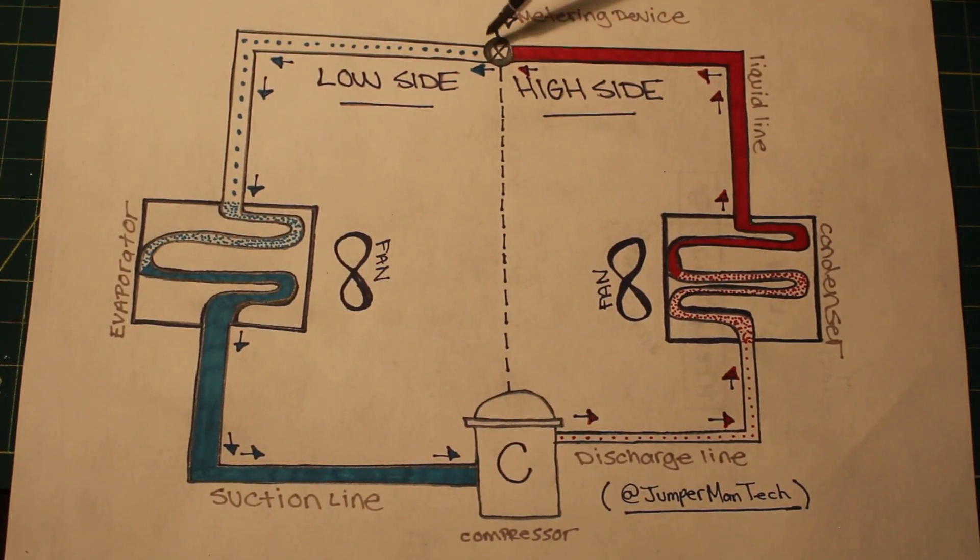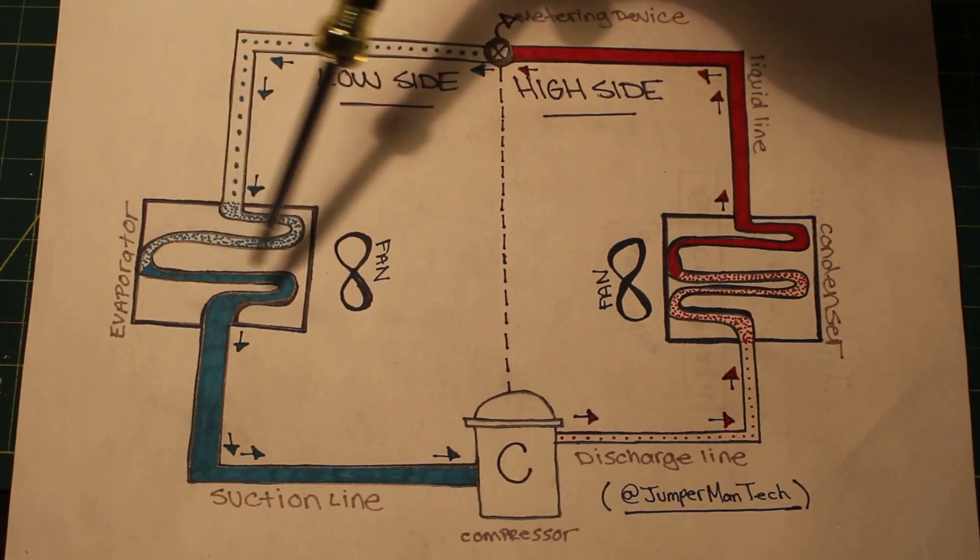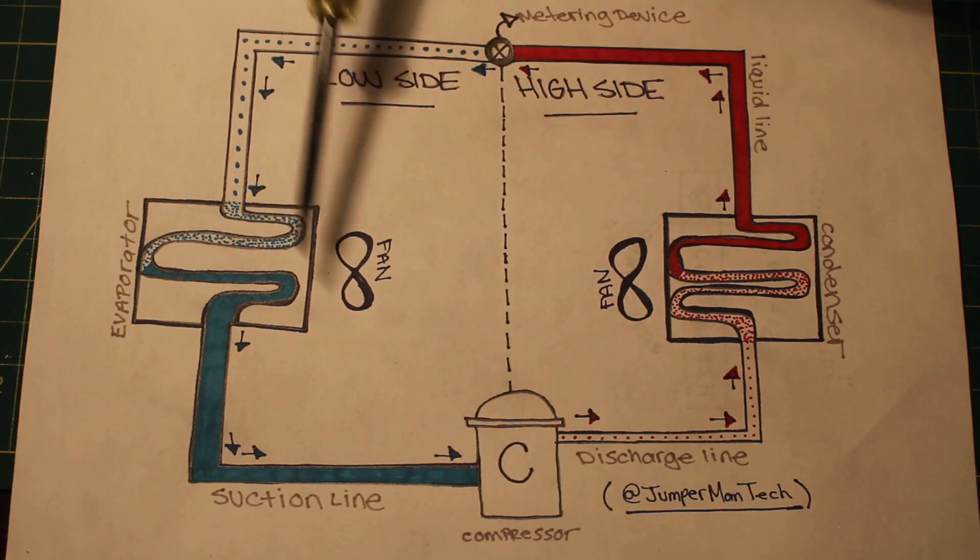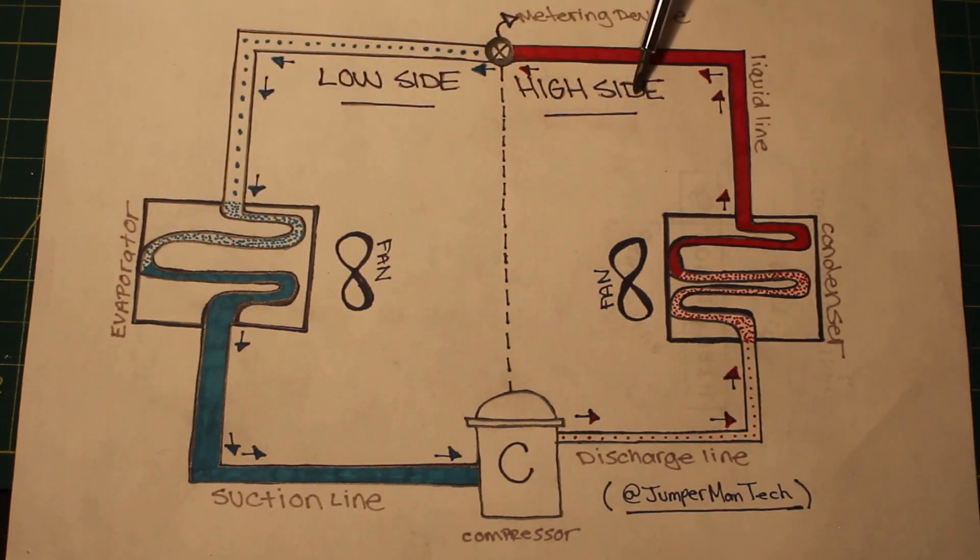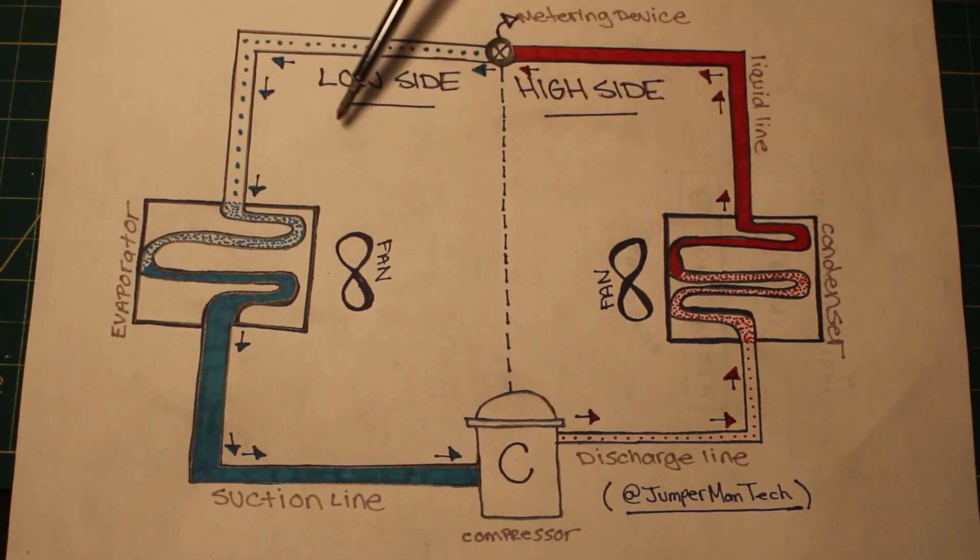Refrigerant next enters our metering device, where there are many types, but its main purpose is to distribute proper amount of refrigerant into our evaporator. If we look at our diagram, we have a low side with our evaporator and a high side with our condenser. Our metering device is what divides the system from the high side, where we have high pressure, and the low side, where we have low pressure.